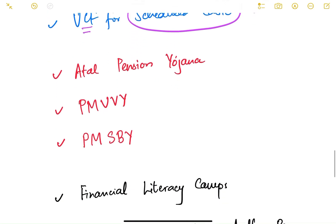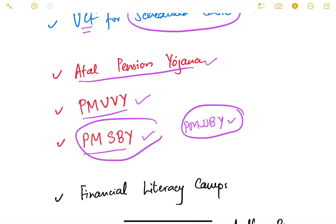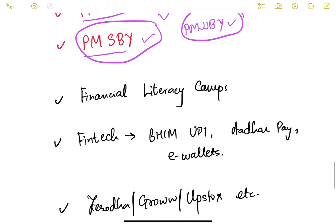For social security, several schemes were started: Atal Pension Yojana, Pradhan Mantri Vaya Vandana Yojana, Pradhan Mantri Suraksha Bima Yojana, and Pradhan Mantri Jivan Jyoti Bima Yojana. We will see all these schemes in detail in subsequent lectures.